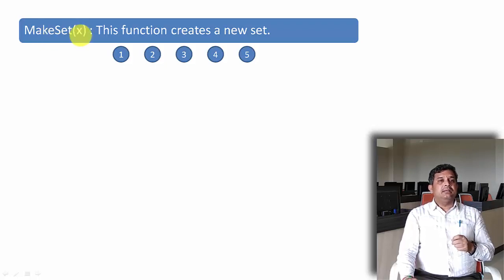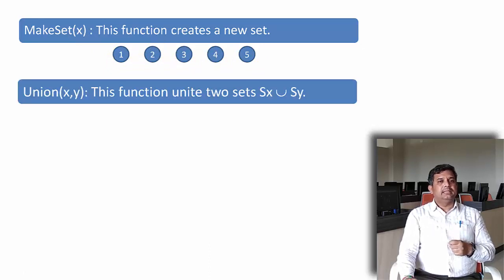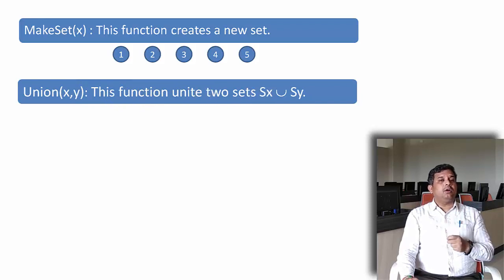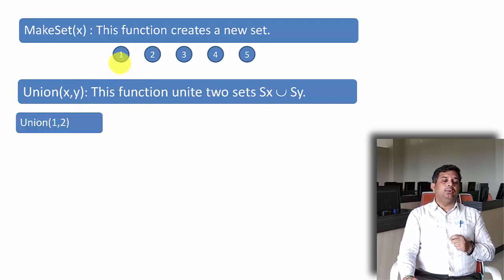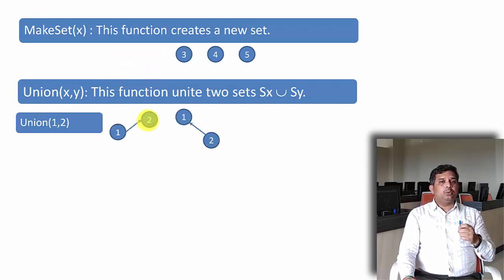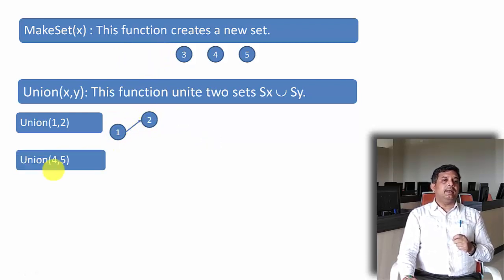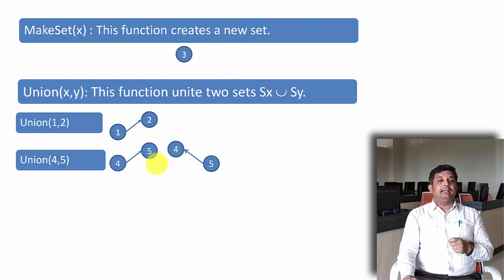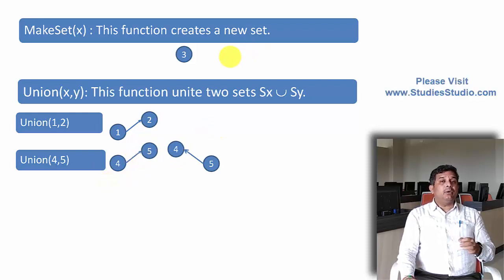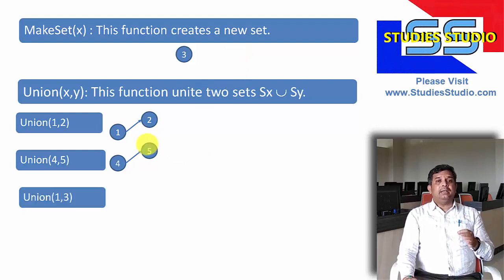Let us say we are having five elements. Make set of x will create five individual sets, represented with the help of these circles. Now we are going to find the union of x and y. Let me take union of 1 and 2 — so 2 can be the representative of 1, or 1 can be the representative of 2. After the union, these individual sets will no longer be there. Now taking union of 4 and 5: four and five are now two disjoint sets, and after the union, 5 can be the representative or 4 can be the representative, and the individual sets will no longer exist.